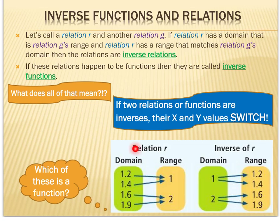Remember, the difference between a relation and a function is that in a relation, we do not necessarily have every x going to only one y. So if you look at relation r, 1.2 goes to 1, 1.4 goes to 1, and so forth — every x value goes to only one y value, so this is actually a function. But in the inverse, 1 goes to both 1.2 and 1.4, so an x value maps to two different y values, which makes the inverse not a function. If both were functions, they would be called inverse functions.